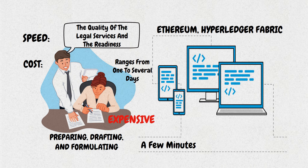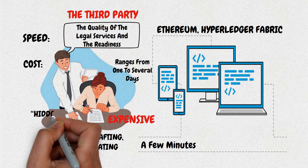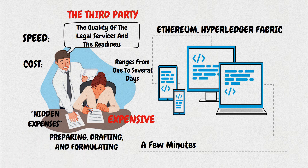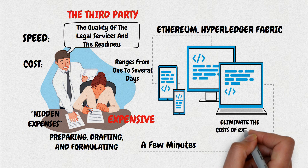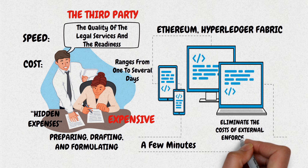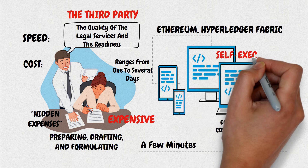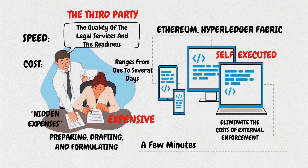Cost: a traditional contract is considered much more expensive than a smart contract — not just because of the third party that has to make a profit, but also because of so-called hidden expenses, such as arbitration for possible contract problems. The blockchain protocol eliminates the costs of external enforcement, and smart contracts are self-executed and able to solve the problem of opportunism that characterizes traditional contracts.